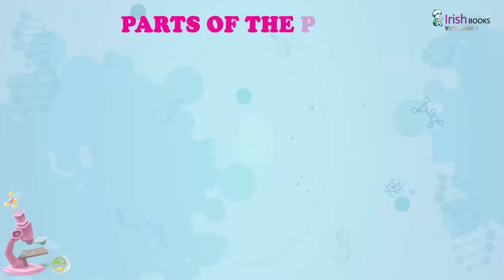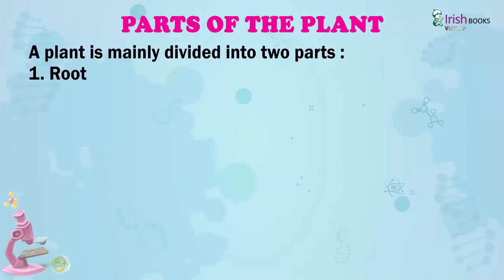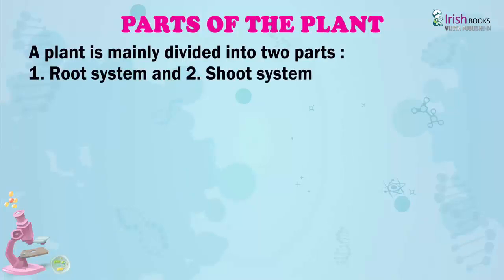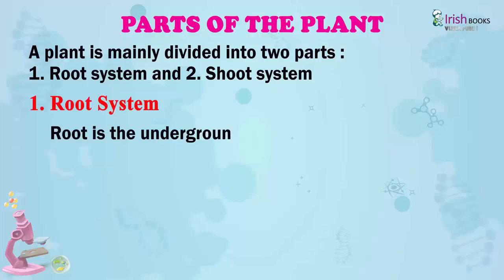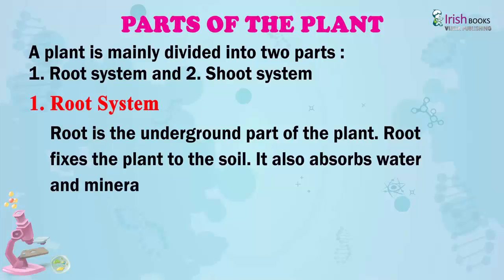Parts of the plant. A plant is mainly divided into two parts: root system and shoot system. Root system. Root is the underground part of the plant. Root fixes the plant to the soil. It also absorbs water and minerals from the soil.